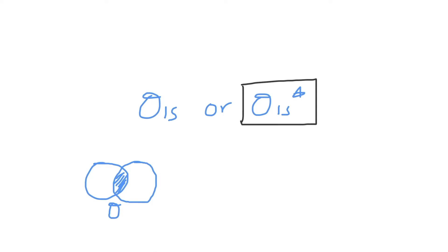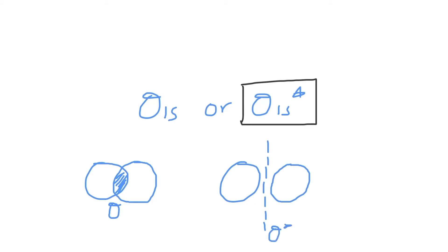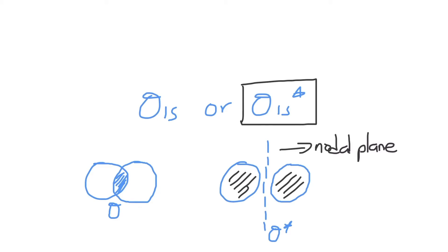Now what does the sigma 1s star antibonding molecular orbital look like? We still have the two 1s orbitals — the two spheres. However, they are now separated by a sort of nodal plane in the center, represented by this dashed line. And this is now the sigma star antibonding molecular orbital. This right here is a nodal plane where there's no electron density. There could be electrons within these orbitals, but there are no electrons in between them, so there's no bond that exists there. And this is what the antibonding representation really is.